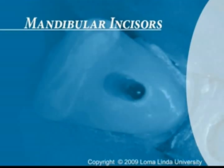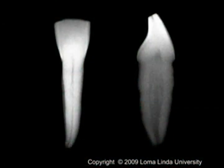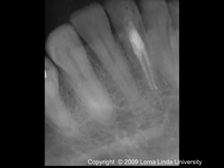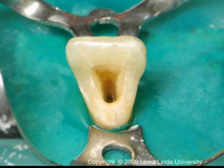Mandibular incisors. The mandibular incisors are narrow in the mesiodistal dimension and broad facial lingually. They may have one or two canals. In young patients, the outline form is triangular with the base incisally and the apex gingivally.